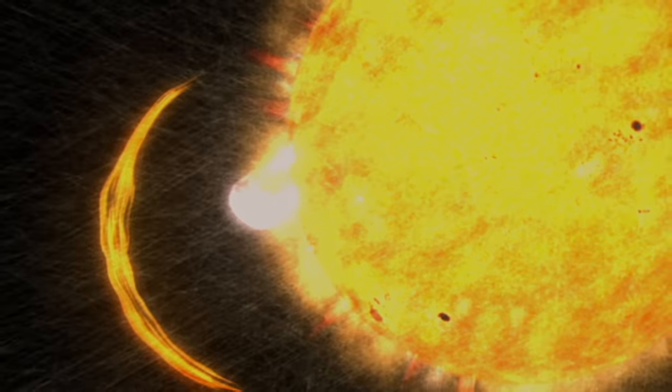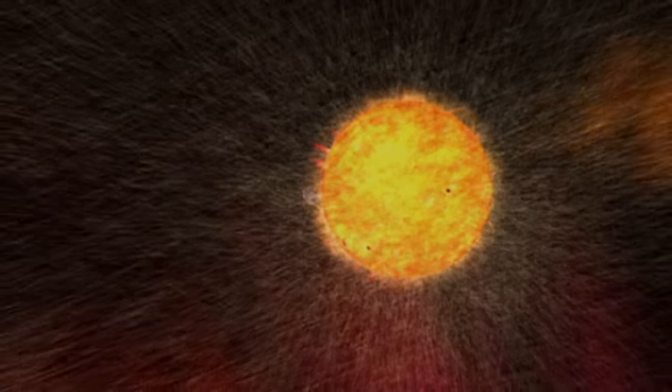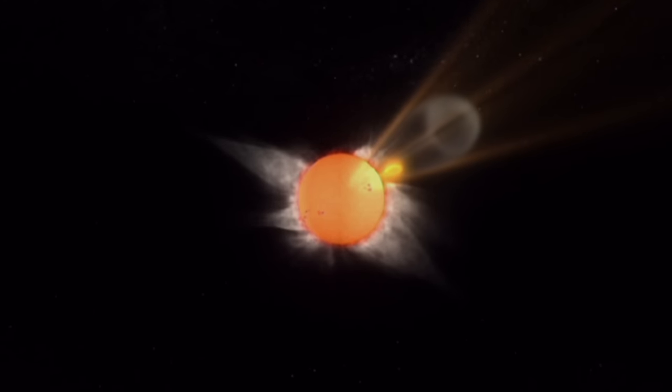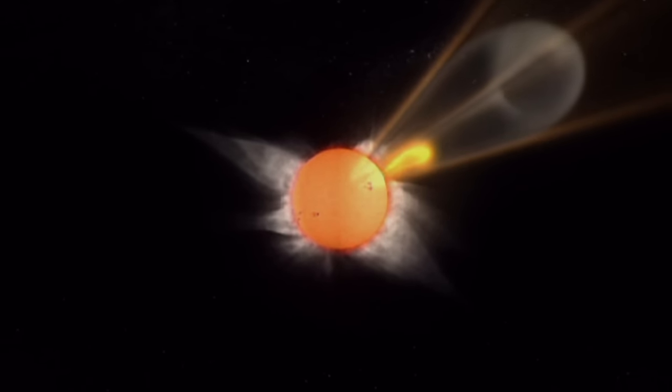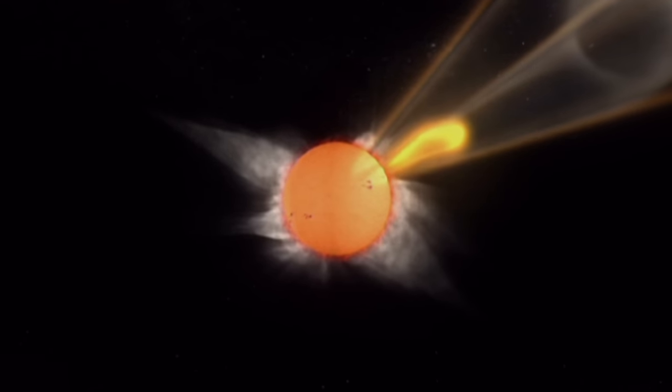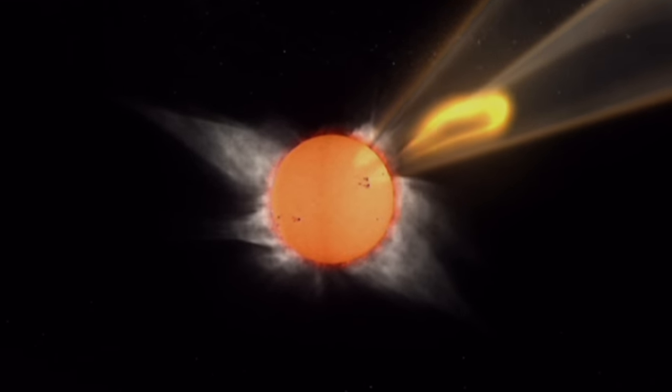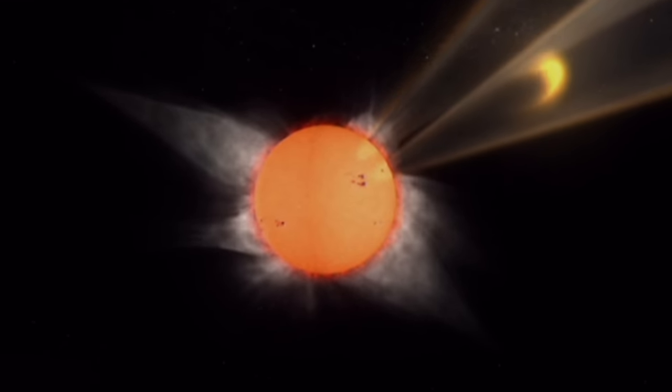Scientists still don't know exactly why CMEs occur. They're formed from the Sun's corona, the atmosphere that surrounds the Sun and stretches millions of miles out into space. Temperatures here reach nearly 3 million degrees Fahrenheit, almost 200 times hotter than the surface. There are magnetic turbulence and magnetic forces lower down in the solar atmosphere that cause literally the outer atmosphere to be blown out into space.